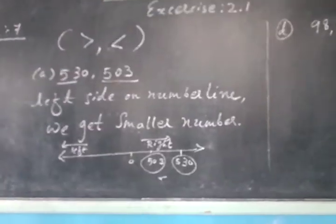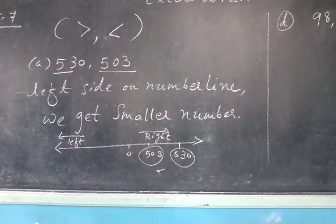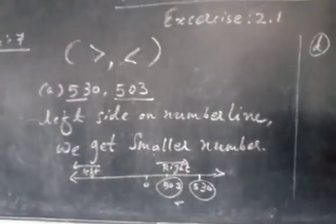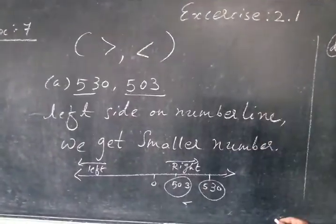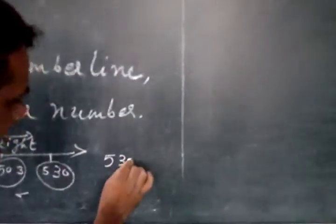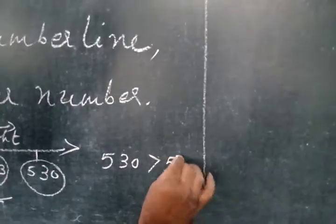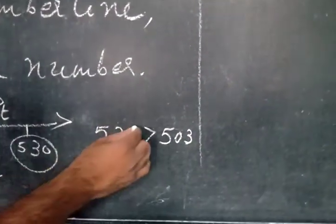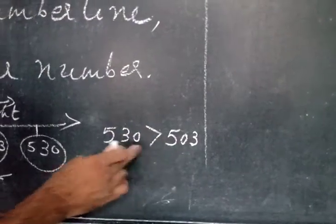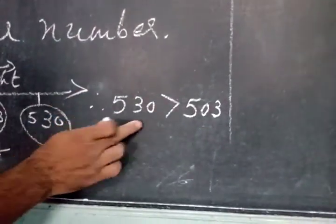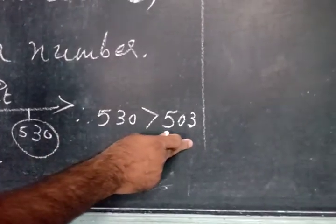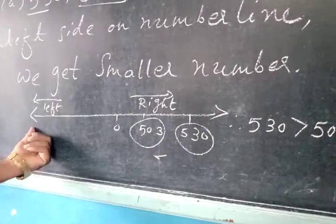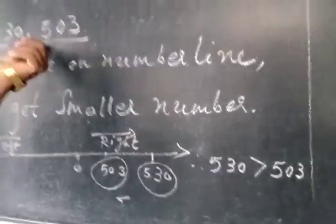Now what we have to do — we have to put the sign between them. So comparing 503 and 530, which is the biggest number? 530. So we can say 530 is greater than 503, and 503 is lying on the left side.